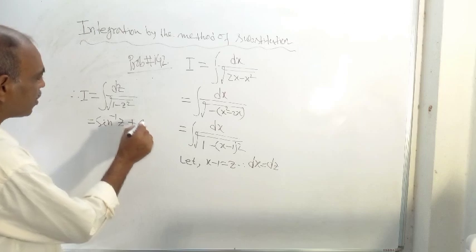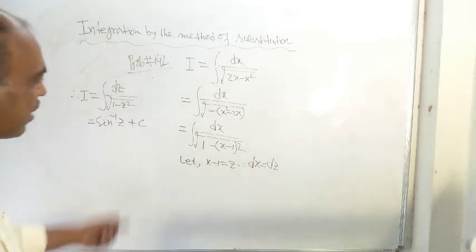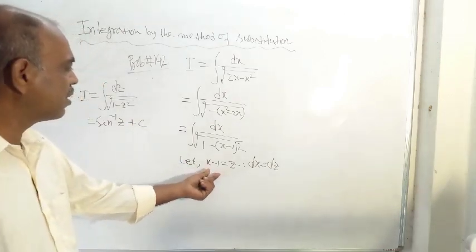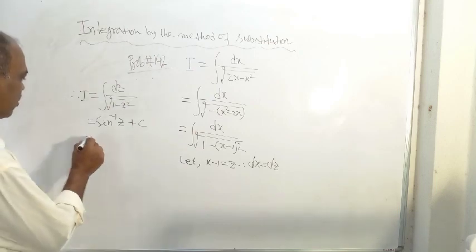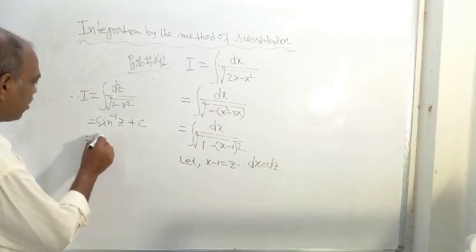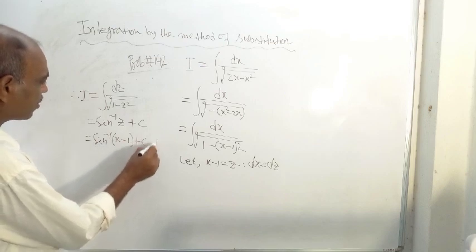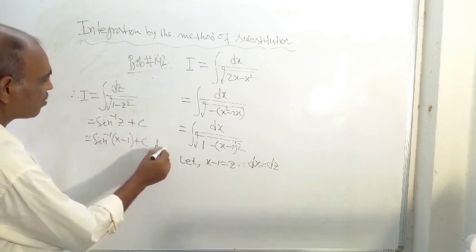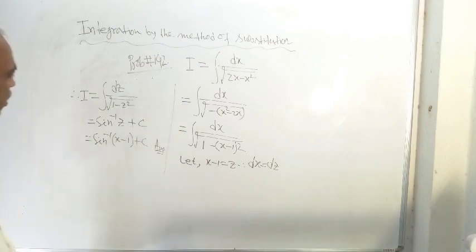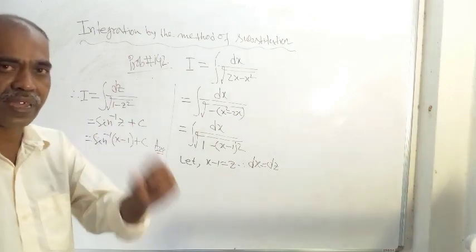Right, plus a constant of integration c. And z is x minus one, so this is equal to sin inverse x minus one plus c. So this is the answer to the given problem.